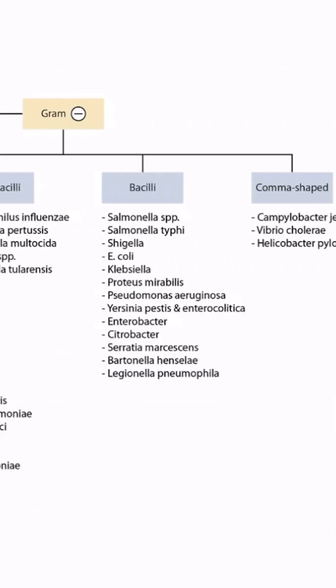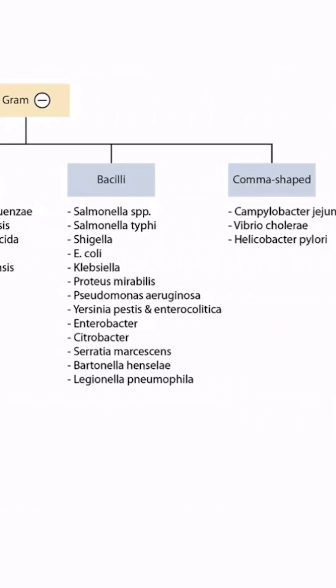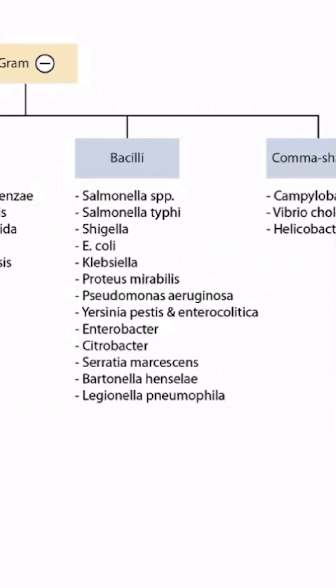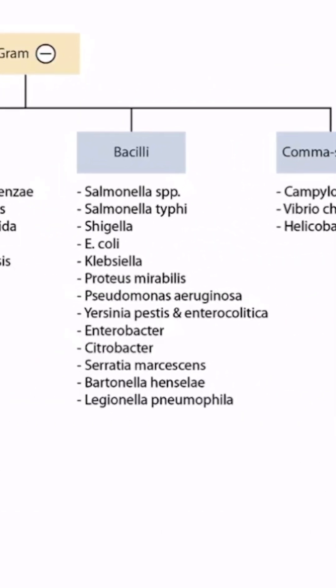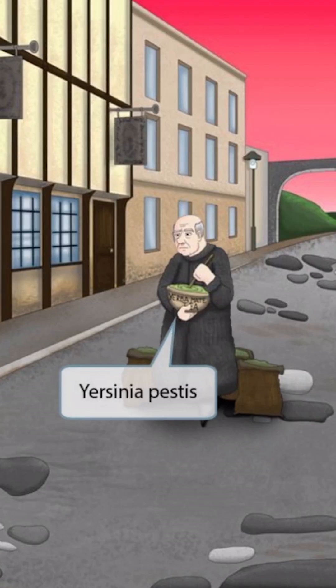This is our bacteria overview figure, and in this video we'll be discussing Yersinia pestis and Yersinia enterocolitica, which you can see right here. This scene takes place back during the Middle Ages, when the infamous bubonic plague killed millions of people.